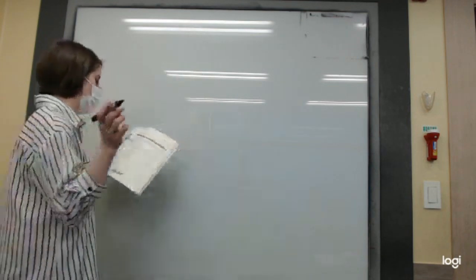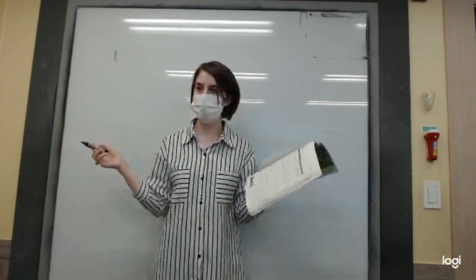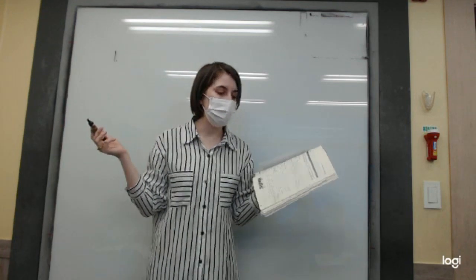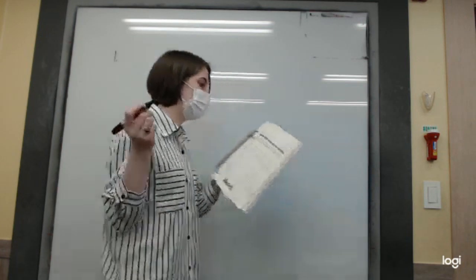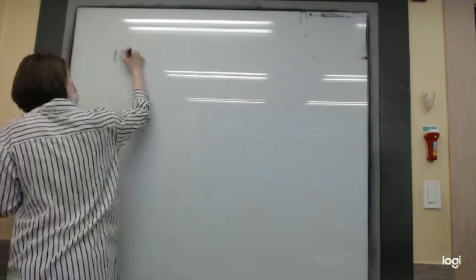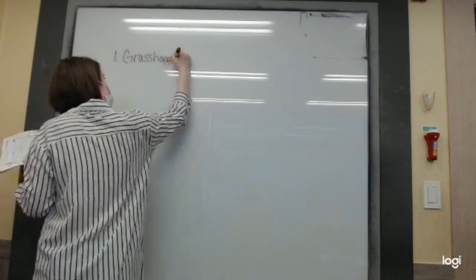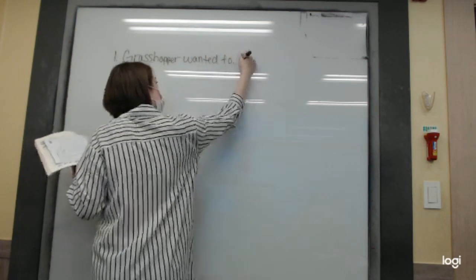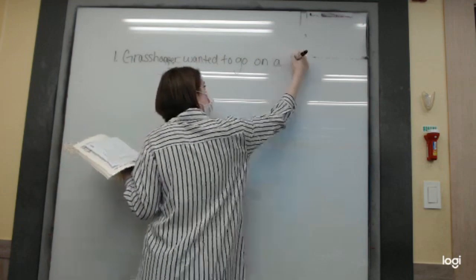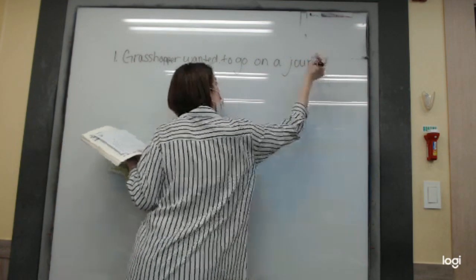Number one, what happened first in the story? Christopher found the road. Ah! But what did he decide on before he found the road? What did he want to do? He wanted to go on a journey. Yeah! He wanted to go on a journey. Grasshopper wanted to go on a journey. Good.